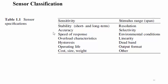As far as the syllabus is concerned, the classification is given in tabular form. Key specification parameters include sensitivity and stimulus range or span, stability of the sensor from both short and long term perspectives, accuracy of the sensor, and speed of response or response time — that is, the time required to produce the output. Overload characteristics means the sensor should withstand loaded conditions, and hysteresis, operating life or lifespan, and cost are also listed.